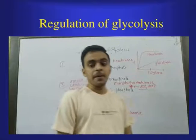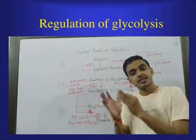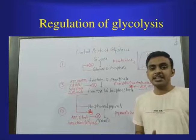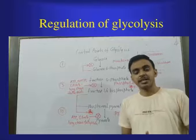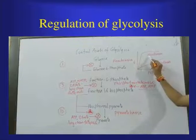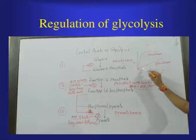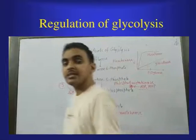When there is sufficient glucose 6-phosphate in the cell, hexokinase is inhibited by product inhibition. Hexokinase saturates very early, but glucokinase becomes more active as the concentration of glucose increases.